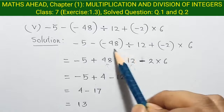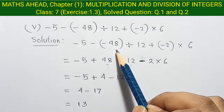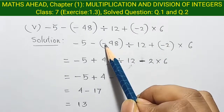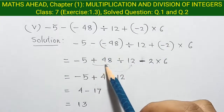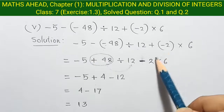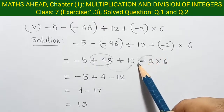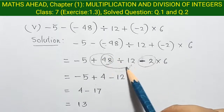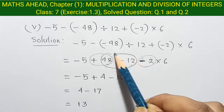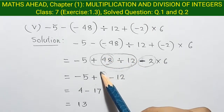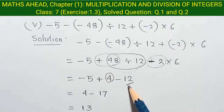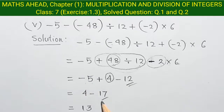In this question, we need to divide. First, we will open this bracket. Then minus 2 is equal to minus 4. And then minus 2 is equal to minus 2. So after we divide 48 by 12, the value equals 4. So this is equal to 5. Then 2 into 6 is equal to 12. So finally, minus 5 minus 12 is equal to minus 17.